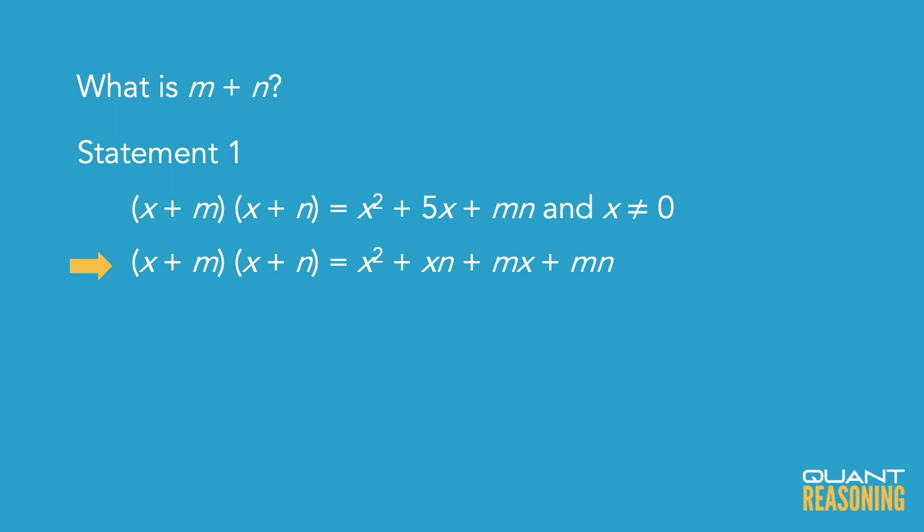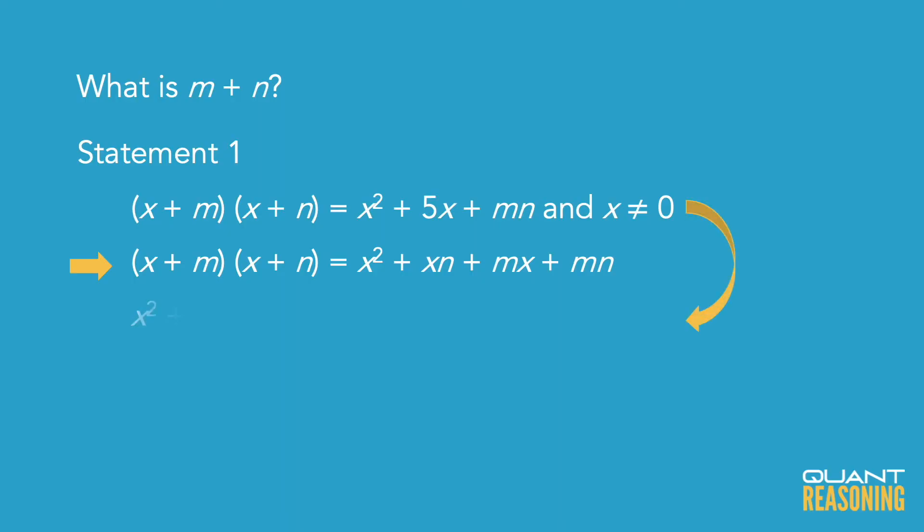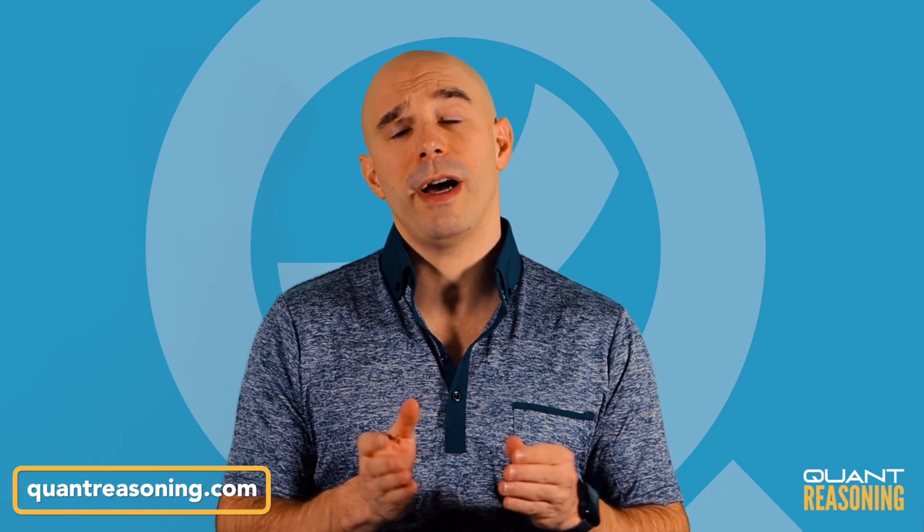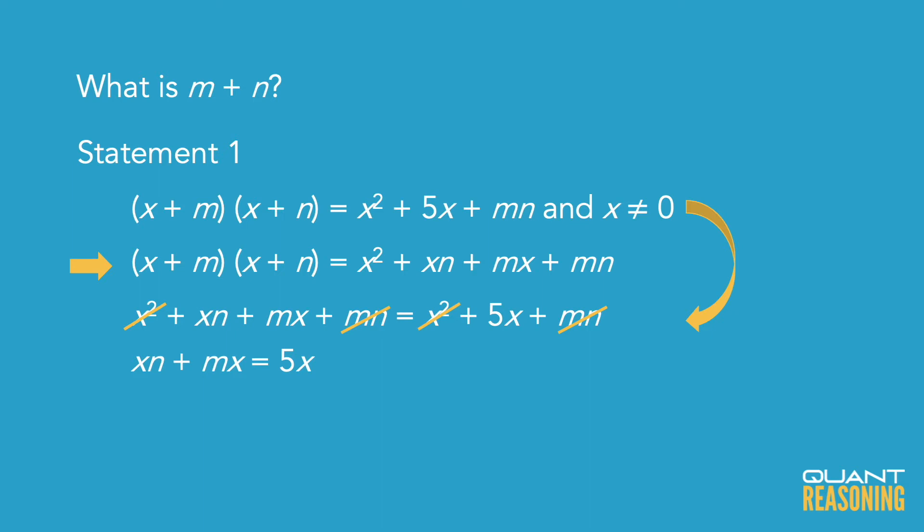Our question wanted to know the sum of m and n, but look at the right hand side of the equation in statement one. It gives us the x² as we expected. It gives us the product mn as well as we expected, but it also has that xn + mx which, if you factor out the x, is just x times (m + n). And looking at the right hand side of statement one, we see that it actually does give us the number of x's. It's five.